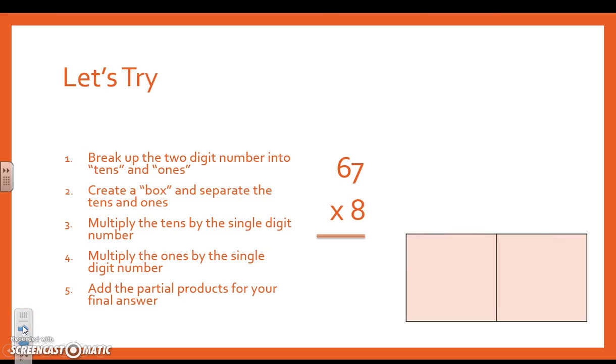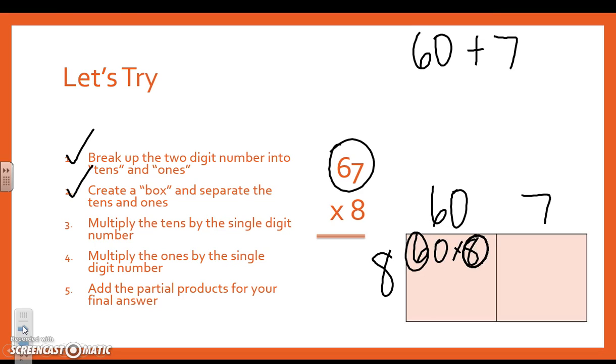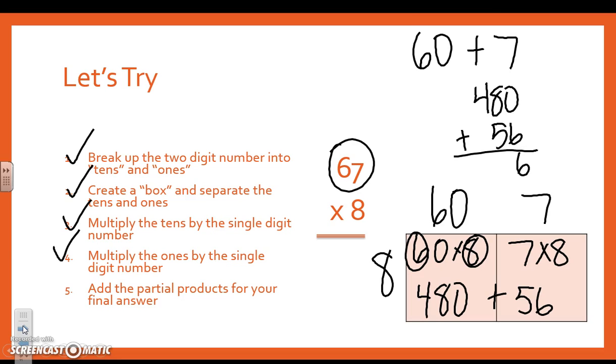Let's do 67 times 8. I believe this one's the last one we're going to do together. So 60 plus 7. Breaking up my tens and ones. Create my box. Multiply by the single-digit number. So 60 times 8. Basic facts. 6 times 8 is 48. One more 0. Multiply by the 1. 7 times 8 is 56. Add my partial products. 480 plus 56. 6 and 0 is 6. 5 and 8 is 13. 4 and 1 is 5. 536.